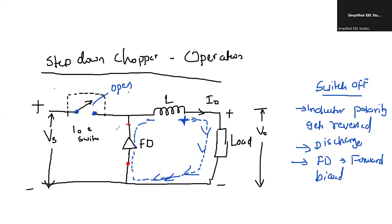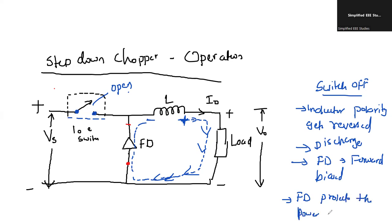Instead of passing the entire current through the switch, some amount of current passes through the freewheeling diode so that it bypasses the switch and protects it. If the freewheeling diode is not there, the entire current flows through the switch and the switch gets spoiled. So to overcome that, we use the freewheeling diode. The freewheeling diode protects the power switch against reverse current.